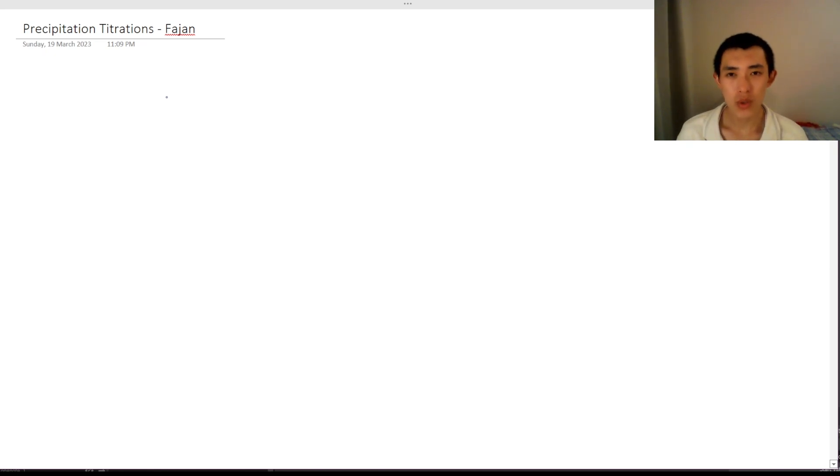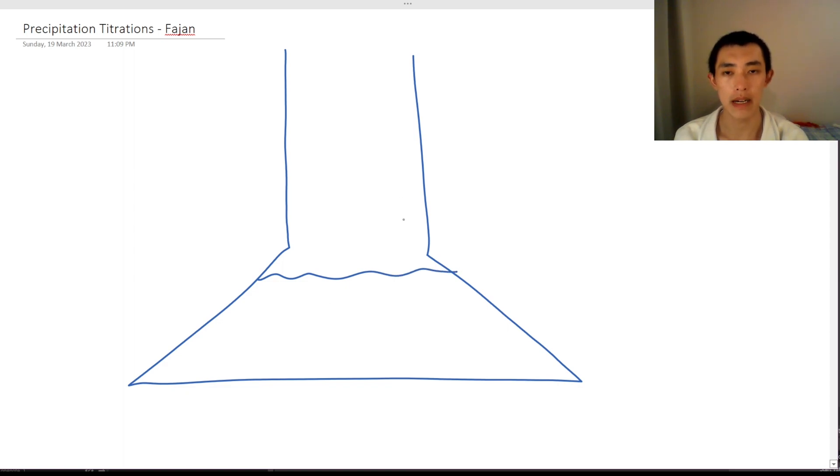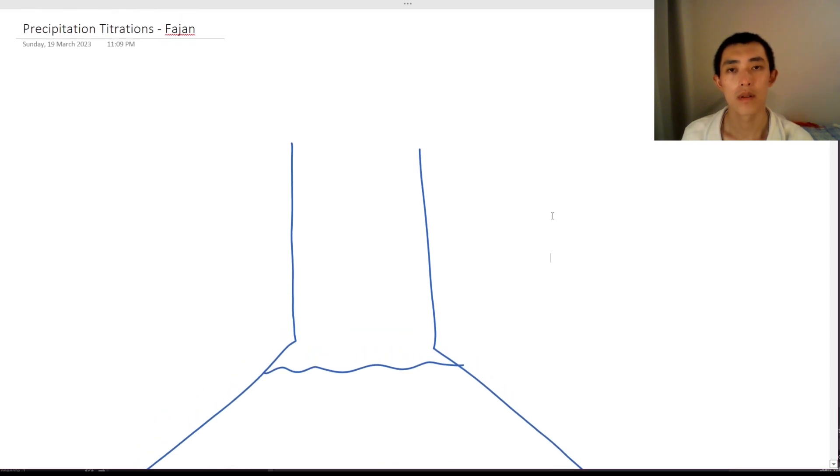Fajan's method is probably one of the most unique methods in that it's a little bit more straightforward than the other ones, but it uses some pretty complex chemistry as well. So what we're going to do is we're going to draw in our conical flask. Of course, we have our burette on top of that one.